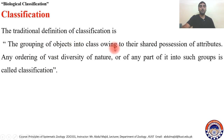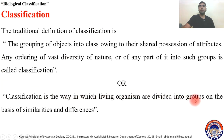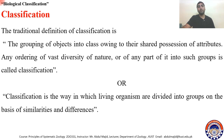The traditional definition of classification is the grouping of objects into classes owing to their shared attributes — objects grouped on the basis of their shared characteristics. Any ordering of the vast diversity of nature into such groups is called classification. Classification is the way in which living organisms are divided into groups on the basis of similarities and differences. Similar organisms are grouped into similar categories and different ones into different categories.